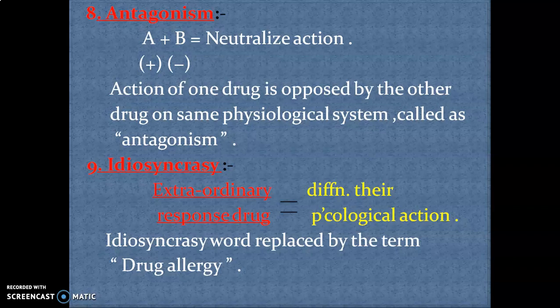Next is idiosyncrasy. When an extraordinary pharmacological response is produced beyond the desired pharmacological action, it is called idiosyncrasy. In other words, it may also be called drug allergy. Idiosyncrasy means: when an extraordinary response of a drug beyond the desired pharmacological action is produced, that is called idiosyncrasy.